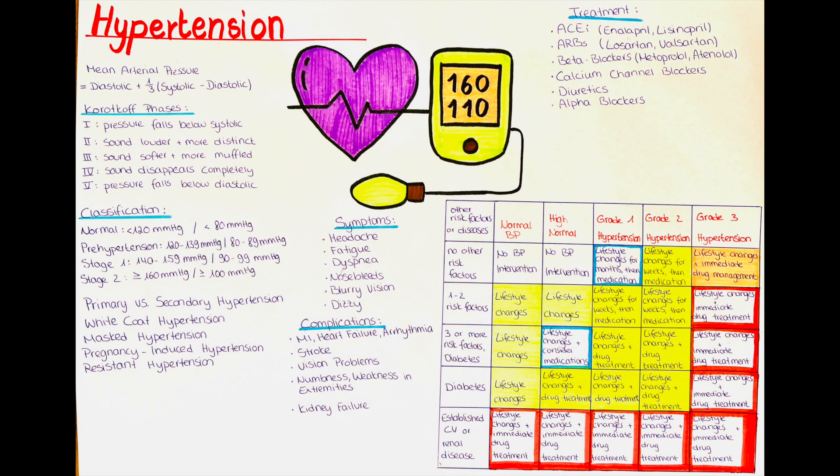Another type is masked hypertension. This type of hypertension occurs when the patient's blood pressure is normal at the doctor's office, but high at home or in other settings. So it is essentially the exact opposite of white coat hypertension.